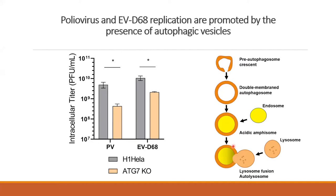These vesicles first appear as little horseshoe crescents but eventually become double-membrane autophagosomes capturing cytosolic content, which is then delivered to the lysosome for degradation and recycling. It turns out the virus turns this process on and benefits from it: when we restrict autophagy by knocking down a critical autophagy gene, both poliovirus and enterovirus lose somewhere between one log and three to four fold in virus titer.